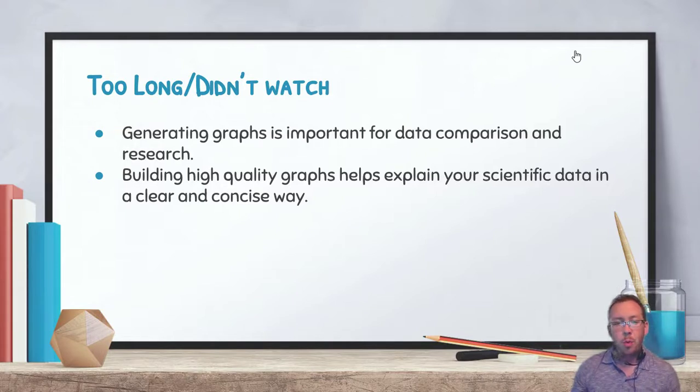All right, so again, just breaking down the logic here. Generating graphs is very important in science. We're going to be doing it a lot, particularly in our labs, and it's very important that we use graphs for data comparison and research. We go back to the last video about drawing logical conclusions. A good graph is going to help us draw better, more logical conclusions than a poor graph, so we want to make sure that we draw the best graphs possible. And building those high quality graphs is going to help explain your data in a very clear and concise way that other people can understand. Remember, we're doing science not just for ourselves, but we're doing it for other people. We're doing it so that other people can understand our research and hopefully draw the same logical conclusions that we draw.